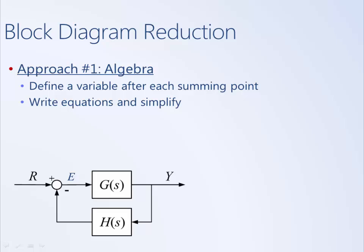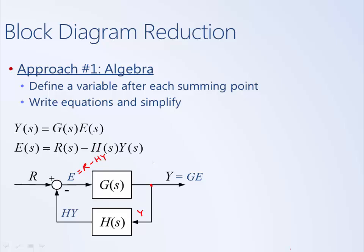The first step in this approach is to define a variable after each summing point. Here we have a summing point, and we'll call the signal coming out of it E for error, because it's the difference between the commanded reference and the measured output. Next, we write equations for the block diagram. Y is the output of transfer function G, and outputs always equal the transfer function times the input, so Y equals G times E. At the branching point, Y branches but remains Y. It goes through transfer function H, giving output H times Y. E is the output of the summing junction, where R is on the positive input and HY is on the negative input, so E equals R minus HY.